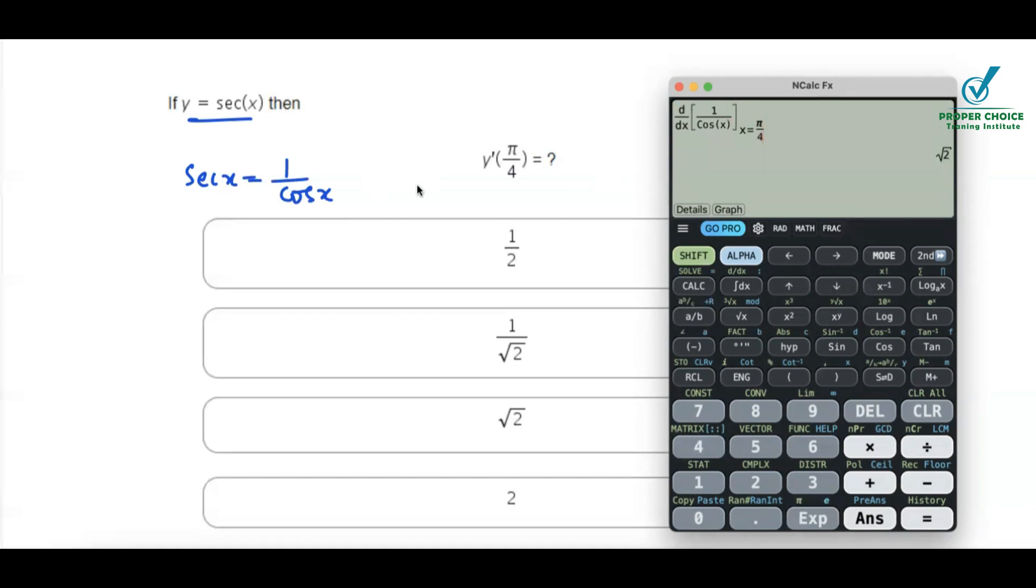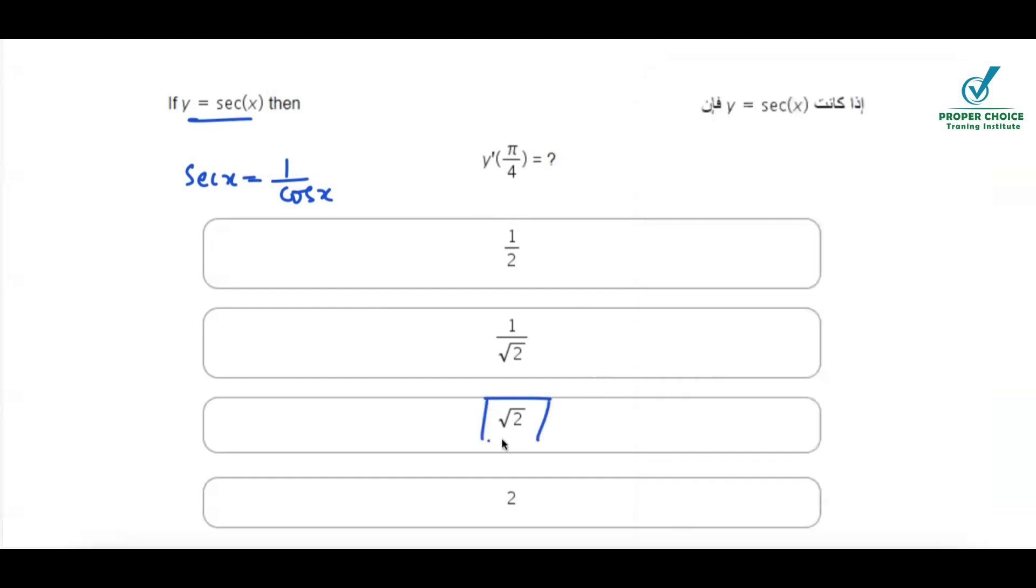Make sure that whenever you are solving the trigonometry and the derivatives, make sure that your calculator is in radian mode. Otherwise you will get a wrong answer. All the trigonometry and its derivatives, whenever we do, calculator should be in radian. So right answer here is option c, that is square root of 2.